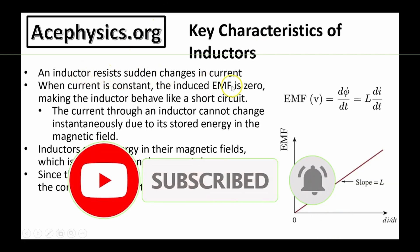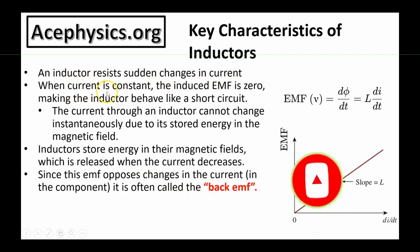An inductor resists sudden changes in current. When current is constant through an inductor, the induced EMF is zero. Inductors store energy in their magnetic fields, which is released when the current decreases. The EMF that opposes the change in current is called a back EMF.